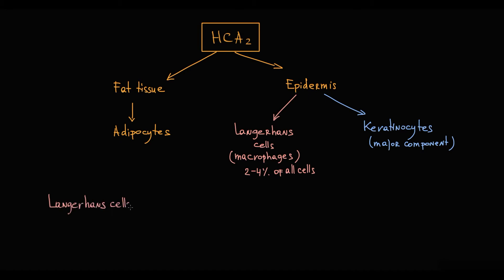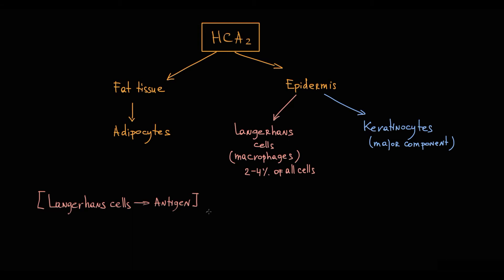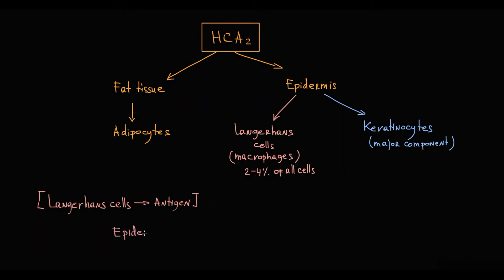They function as antigen-presenting cells. When they contact antigen, they uptake it and migrate from the epidermal compartment to the draining lymph node, where they present antigen fragments to the effector cells of the adaptive immune system.